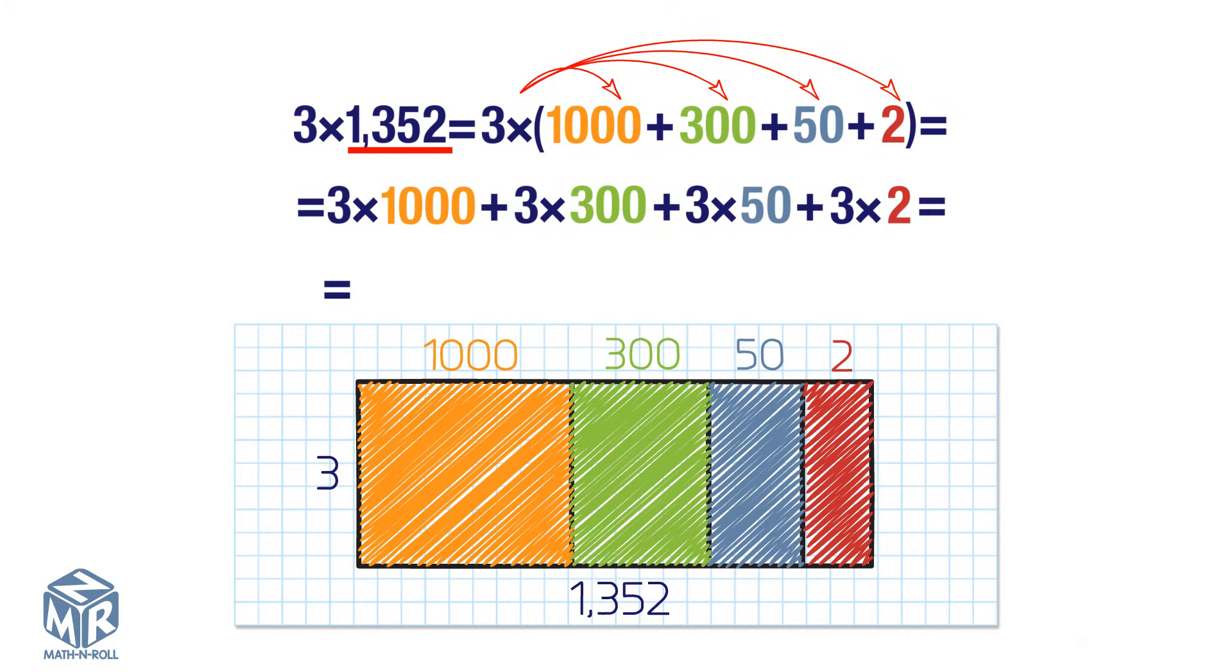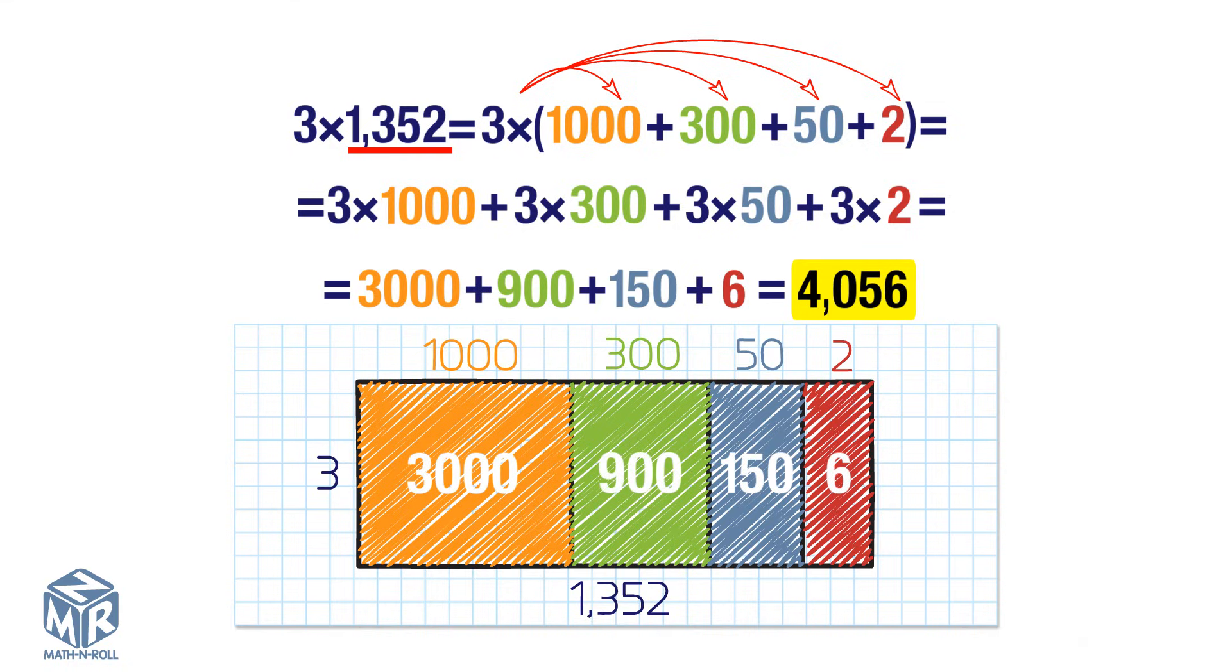Add the partial products. 3,000 plus 900 plus 150 plus 6 equals 4,056. So 3 times 1,352 equals 4,056.